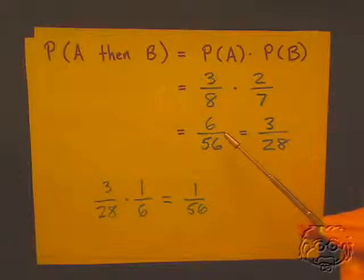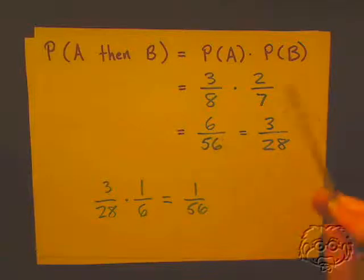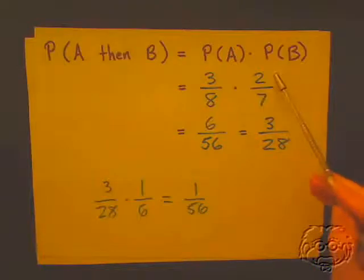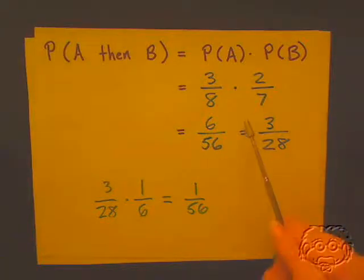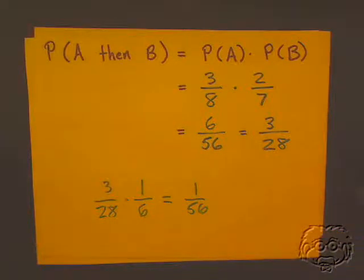Careful! I pocketed the marble, I didn't put it back, so I've changed the total number of marbles in the bag. I've reduced the total by one and the number of blue marbles by one. So now, this probability of the combination is three-eighths times two-sevenths. That, when simplified, is three over twenty-eight.